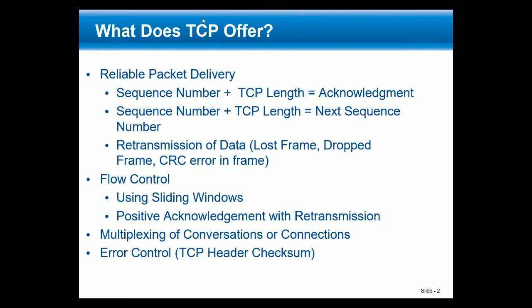TCP, again, since we're providing reliable packet delivery, the way that it retransmits data is: if I send you sequence number plus length, I start my retransmission timer, and if my timer expires and I haven't received an ACK from you, I will retransmit that same sequence number plus length. Typically what causes retransmissions are lost frames, dropped packets, CRC errored frames, and cable problems.